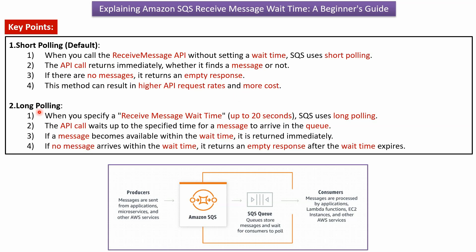The second point is long polling. When you specify a receive message wait time, you can set up to 20 seconds, and then SQS uses long polling. The API call waits up to the specified time for a message to arrive in the queue. If a message becomes available within the wait time, it returns the message immediately. If no message arrives within the wait time, it returns an empty response after the wait time expires.